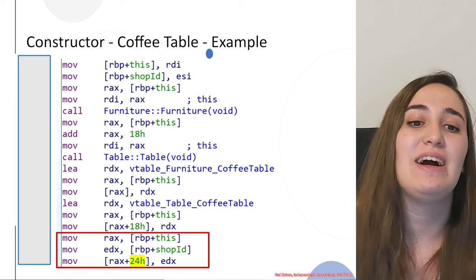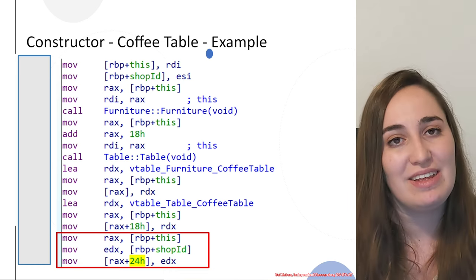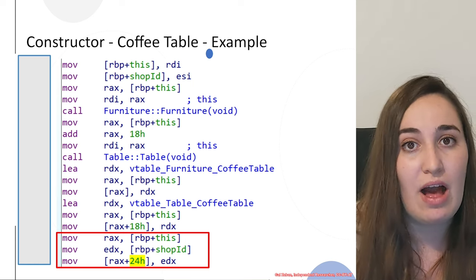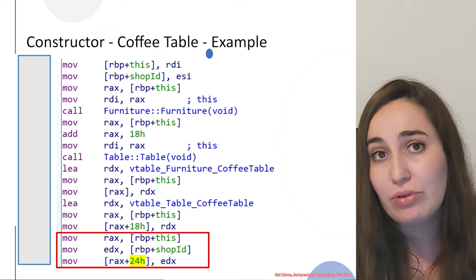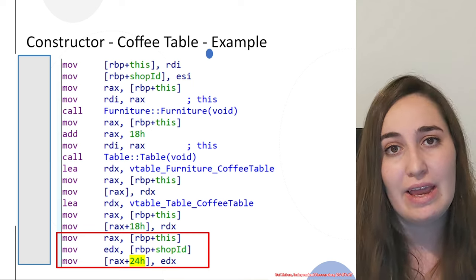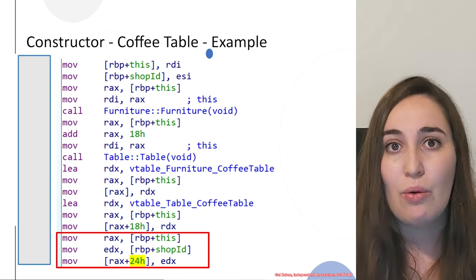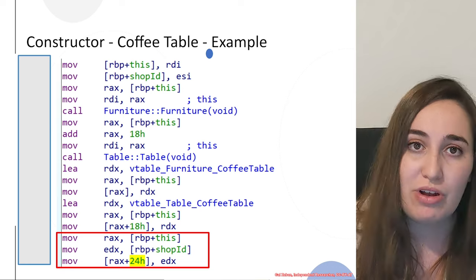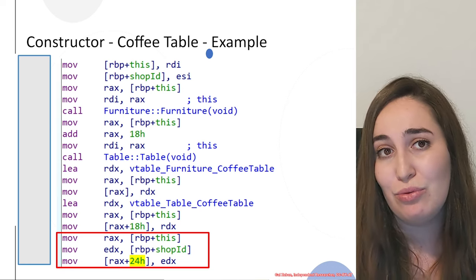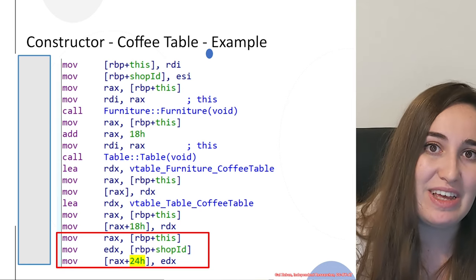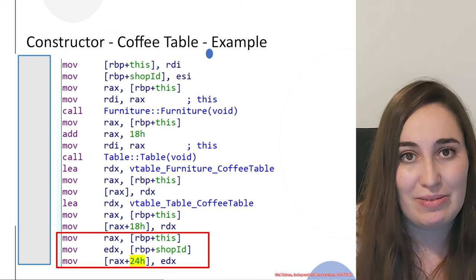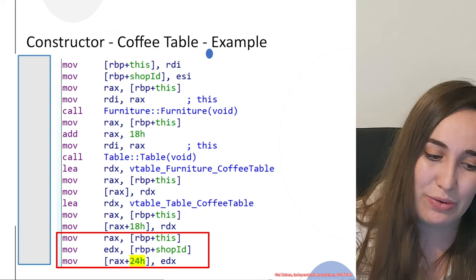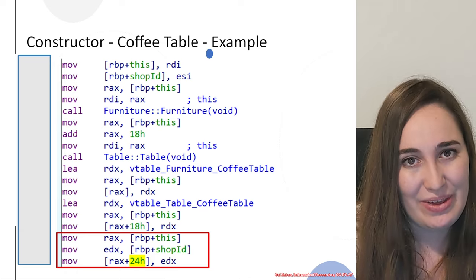That covers the basics of multiple inheritance. In the next part, we will discuss how virtual calls look in multiple inheritance cases — what happens when we need to call virtual functions but have two different V tables inside the object. See you in the next video.